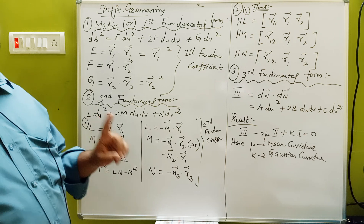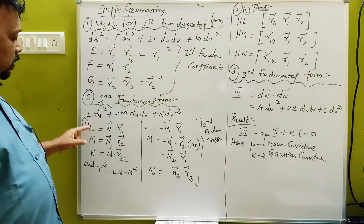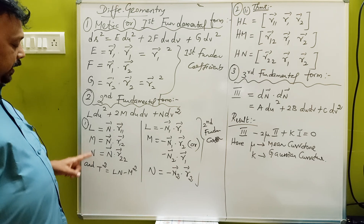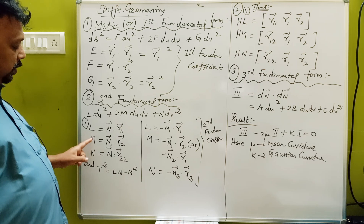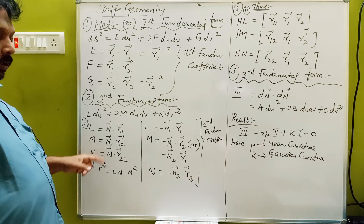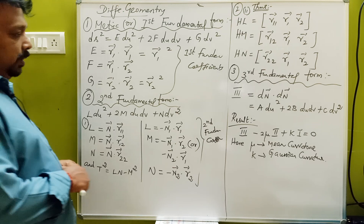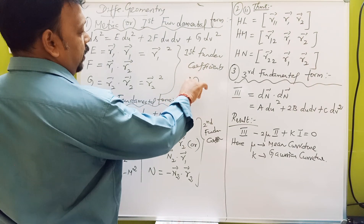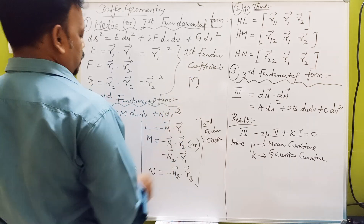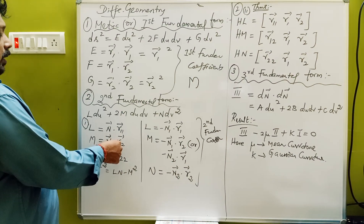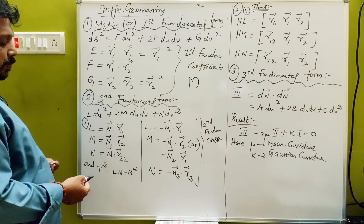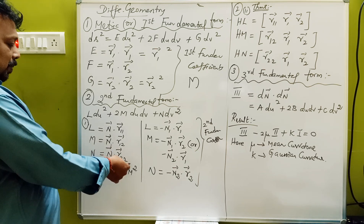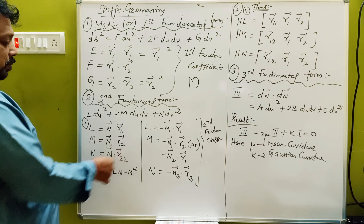L is the same as R11. Here is R11 hat. M is the same — now we use M: R12 hat. Then M1 hat is the same as R12. Then R12 hat is the same as R12 hat. We can start with little difference. Because N1 hat is the same as R12 hat, and N is the same as R22 hat.